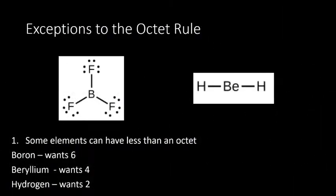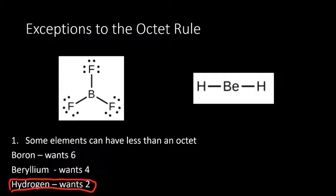First, the exceptions. One type of exception is when we have less than an octet, and we've already seen some of that. Hydrogen is the most important example where we want less than an octet. By the way, there are reasons for why all of these different atoms want the number of electrons they want — we're not going to go over that in the video, it would get too long. We're just going to give the number they each want, and you'll need to memorize that for now. Some elements have less than an octet. Hydrogen wants 2, we already know that.